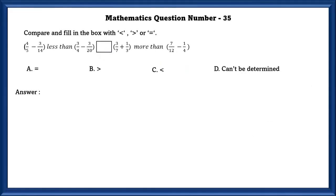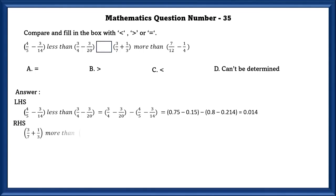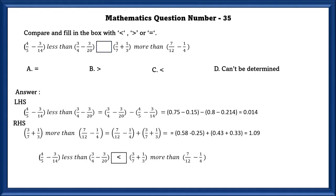Mathematics question number 35. Compare and fill in the box with greater than, less than, or equal to. First let us solve the left hand side. We convert the left hand side fractions into decimals, so that will be easy for us. That is equal to 0.014. Now we will solve the right hand side. That also will convert into decimal. So right hand side is 1.09. Now we can check if it is greater than or less than. So left hand side is less than right hand side. So the answer is C.